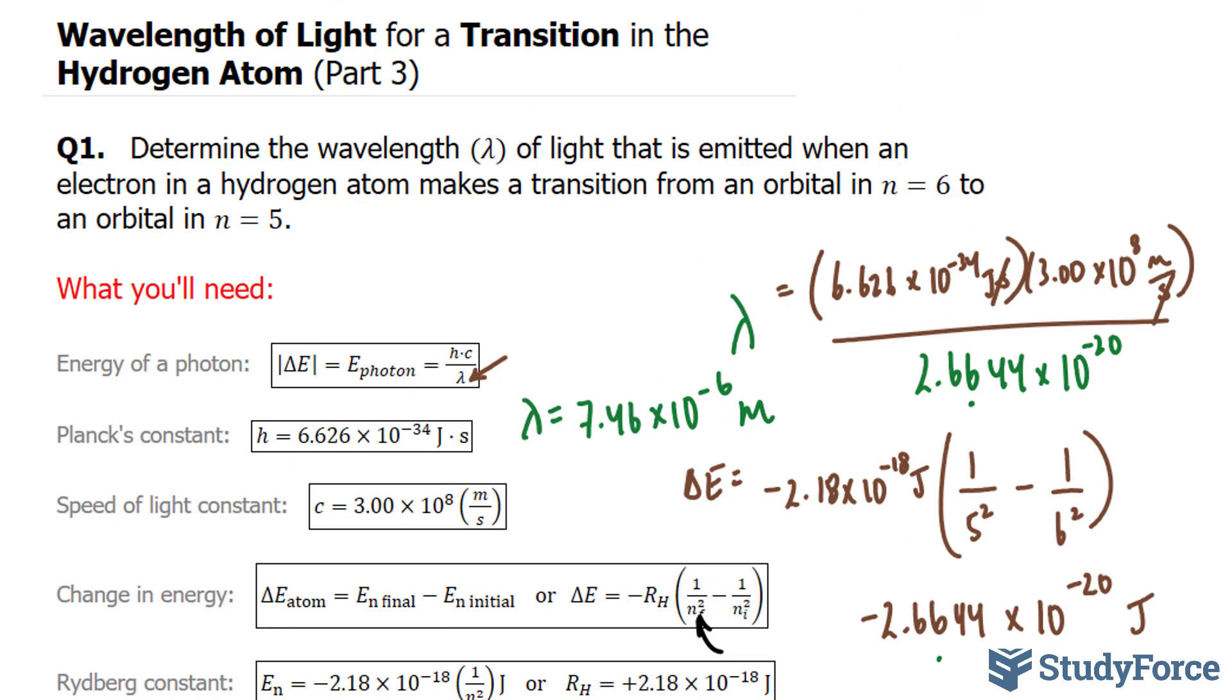And there you have it. That is how to find the wavelength of light for a transition in the hydrogen atom.